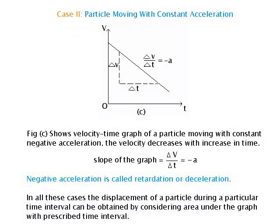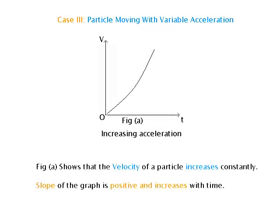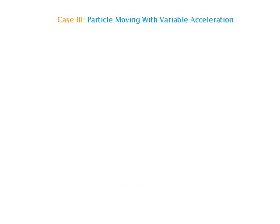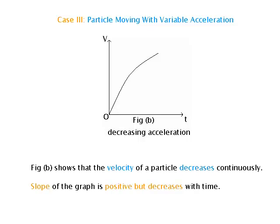Negative acceleration is called retardation or deceleration. In all these cases, the displacement of a particle during a particular time interval can be obtained by considering the area under the graph for that time interval. Case 3 — Particle moving with variable acceleration: Figure A shows velocity increasing with a positive slope that grows with time; Figure B shows velocity decreasing with a positive slope that diminishes with time.